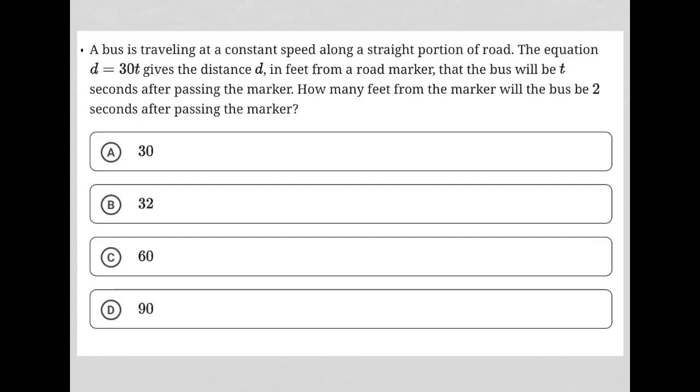So this question says a bus is traveling at a constant speed along a straight portion of road. The equation D equals 30T gives the distance D in feet from a road marker that the bus will be T seconds after passing the marker.